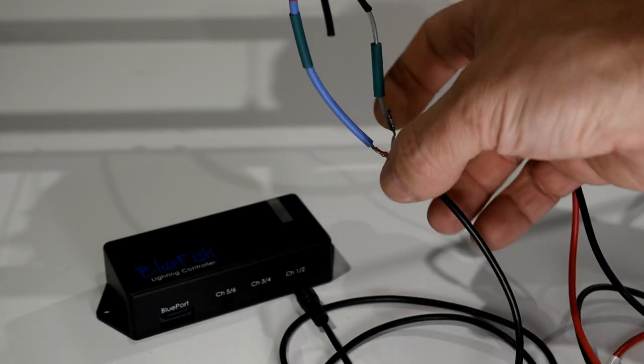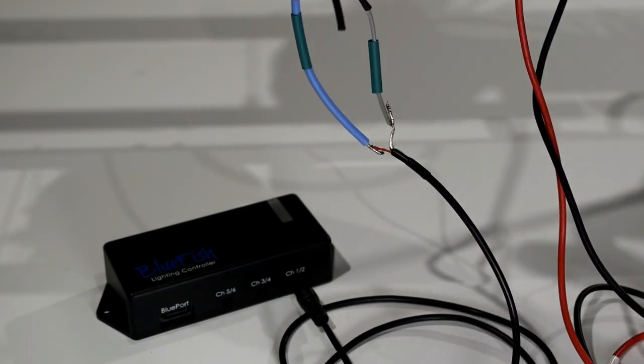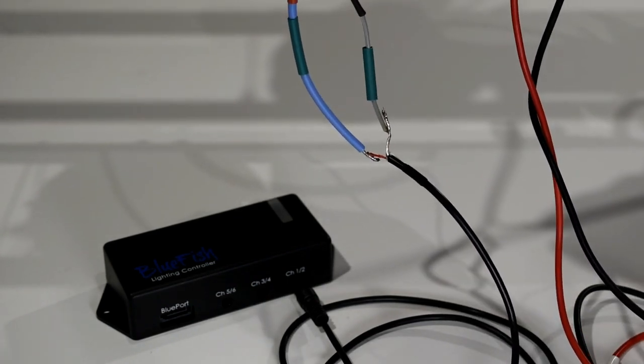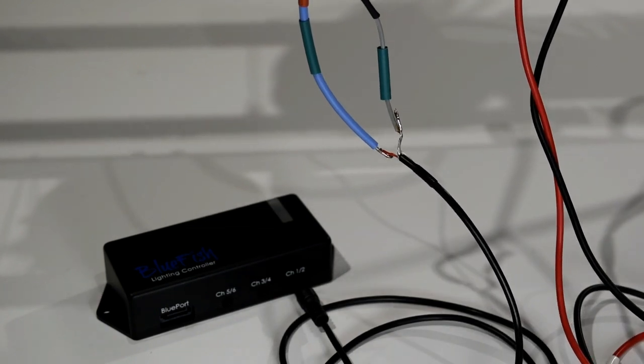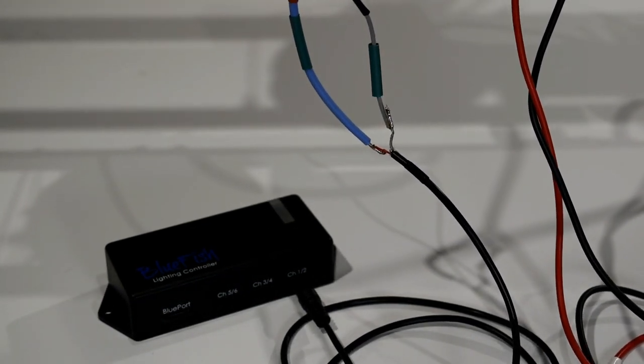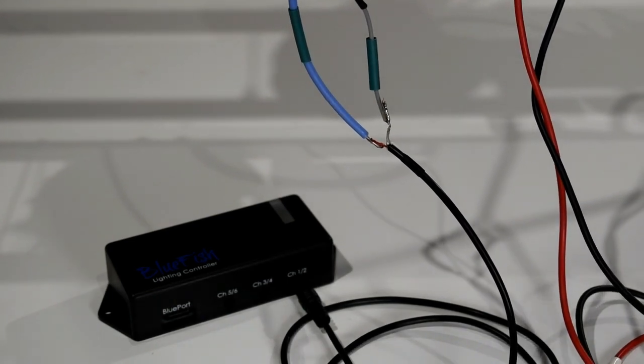You would just hook up your purple lead to the positive, and you would hook up the gray lead to the negative. In this case, with the bluefish, the red wire is the positive, and the uninsulated wire is the ground.